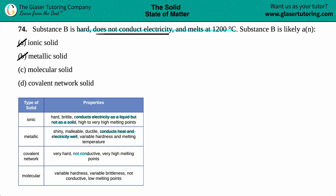Looking at covalent network and molecular, both are non-conductive, meaning they do not conduct electricity. So we're down to molecular or covalent. In this case, they told us that this substance was hard and it has a high melting point — 1200 degrees Celsius. That's pretty high when you think of room temperature being 25 degrees Celsius, so this is a high temperature.